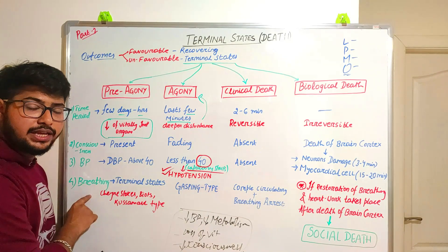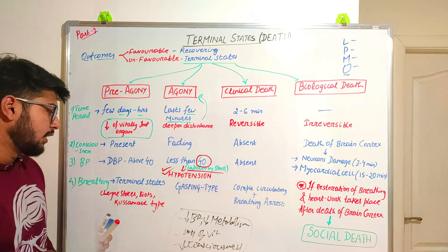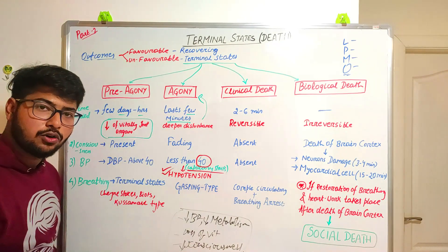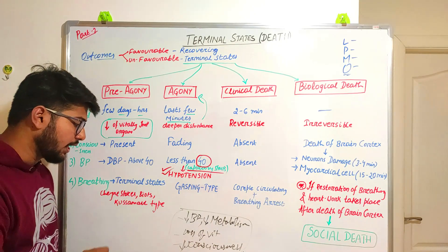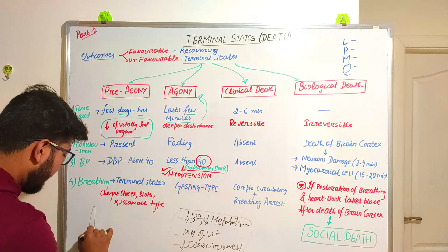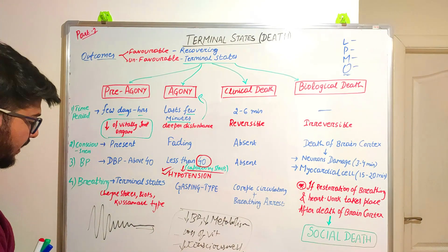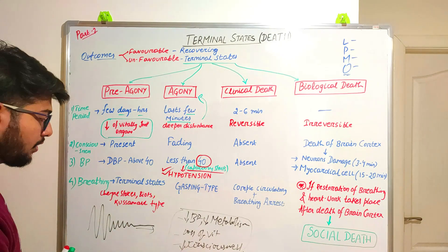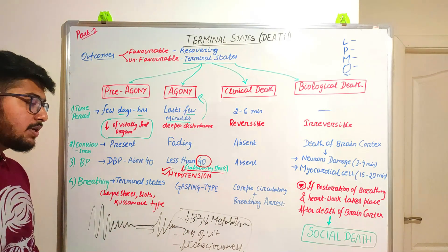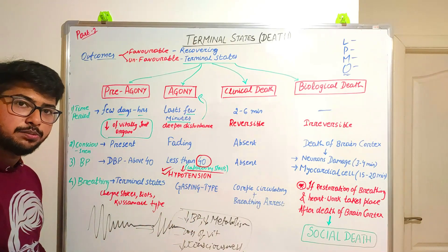Regarding breathing type: in pre-agony, certain terminal types of respiration occur, such as Cheyne-Stokes breathing, Biot's breathing, and Kussmaul-type breathing. These involve alternating hyperpnea and apnea conditions and are associated with periodical patterns — known as periodical breathing. In agony, there will be gasping-type respiration.